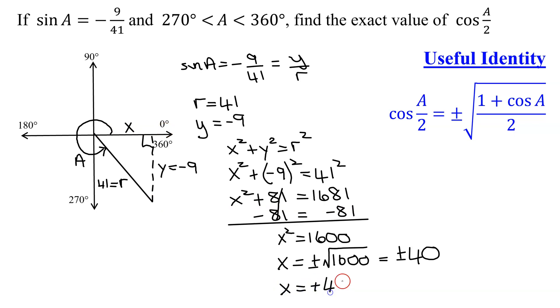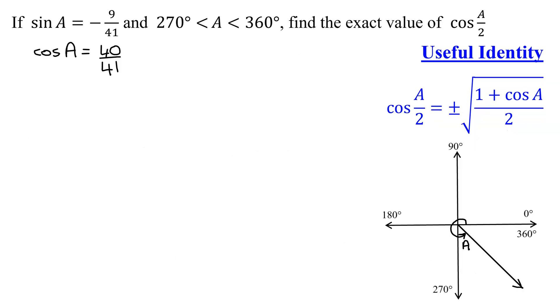Now I can find the cosine of angle A. Remember, the cosine is X over R. X is 40 divided by R is 41. I'm running out of room, so let's go to the next slide.